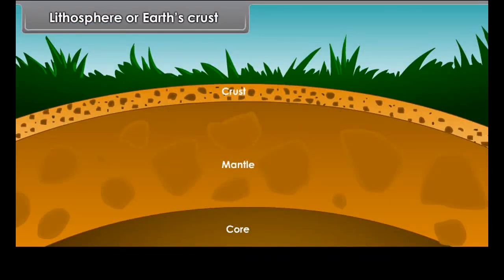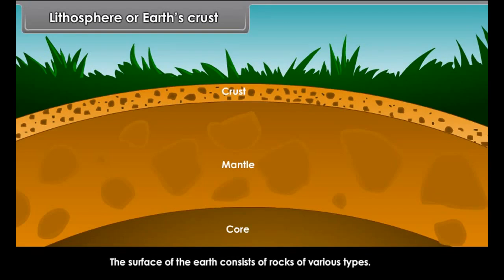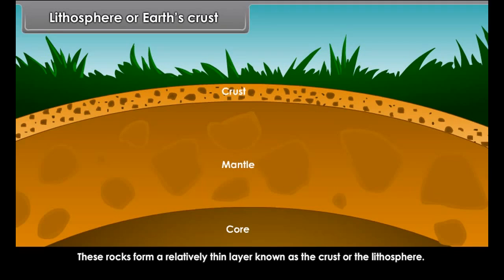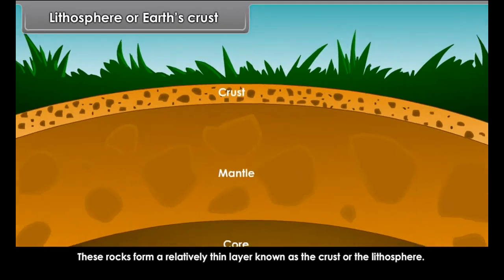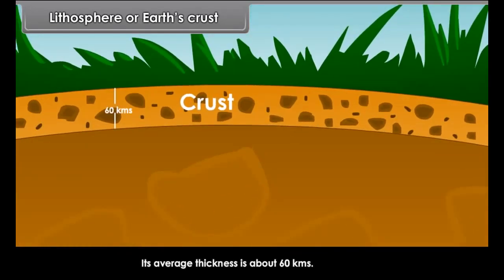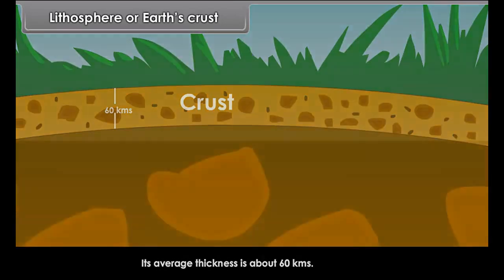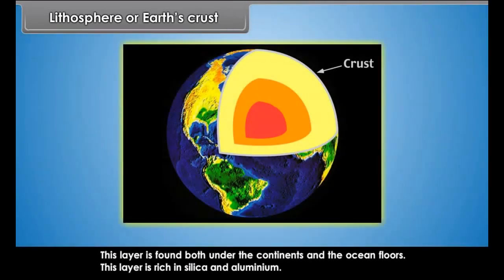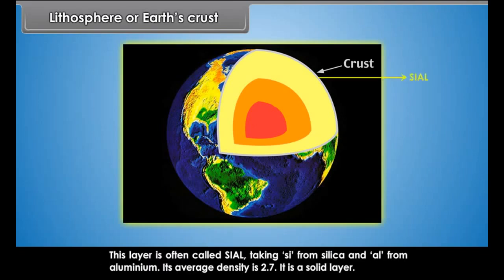Lithosphere or Earth's crust. The surface of the Earth consists of rocks of various types. These rocks form a relatively thin layer known as the crust or the lithosphere. Its average thickness is about 60 kilometers. This layer is found both under the continents and the ocean floors. This layer is rich in silica and aluminium, and is often called Sial.